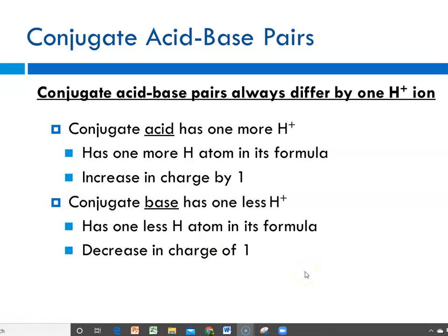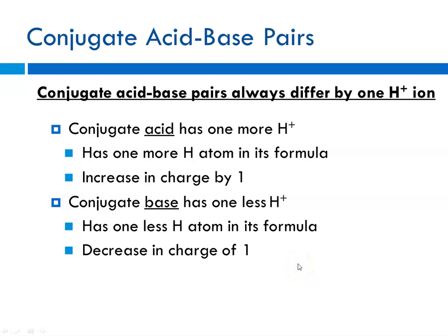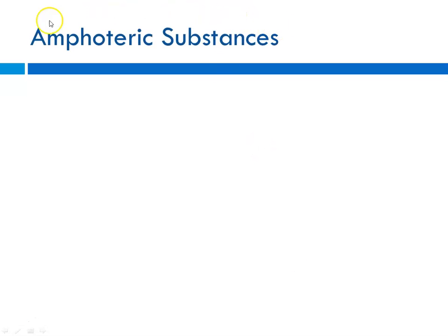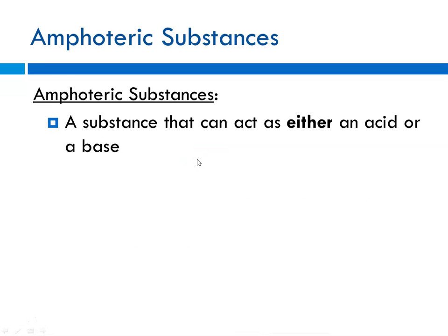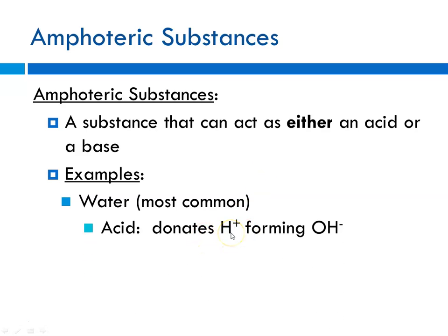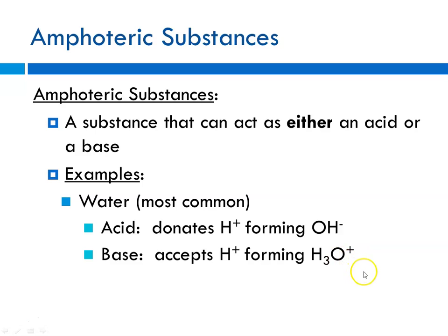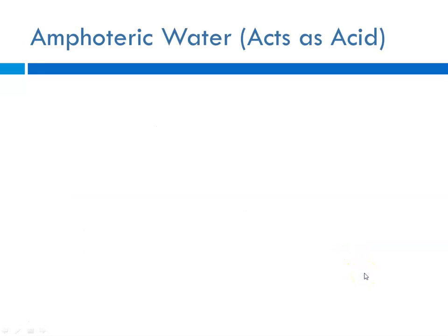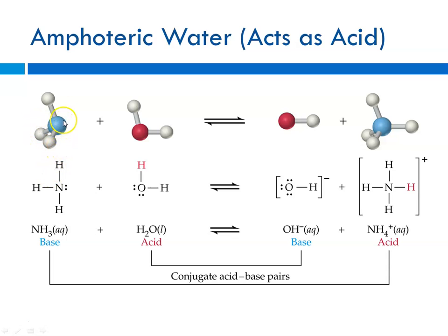We're showing water acting as both an acid and a base, and that is the definition of an amphoteric substance. Amphoteric substances are substances that can act either as an acid or a base — in terms of a baseball analogy, they're switch hitters. Water is the most common example. It can donate a proton to act as an acid, and it can accept an H-plus to form the hydronium ion, acting as a base.